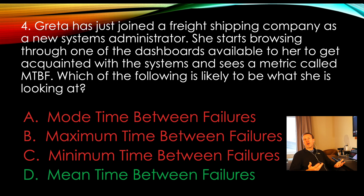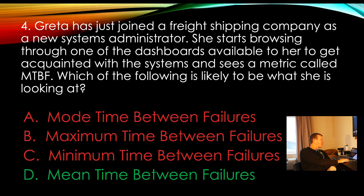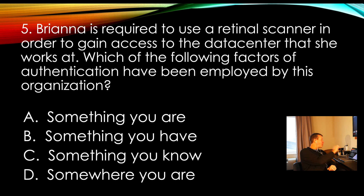Mean time between failures is the answer. It's the average amount of time that a system is going to be up before we can expect another failure within the same category device. For instance, if I've got 100,000 hard drives of a very specific model, we're looking at what's the mean time between failures for that specific hard drive, and maybe whether we should look at a different model if that time is not long enough.